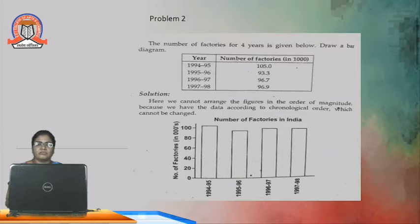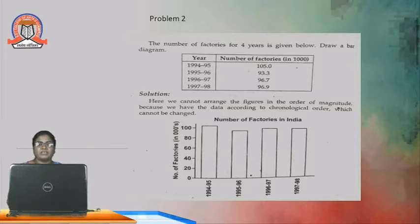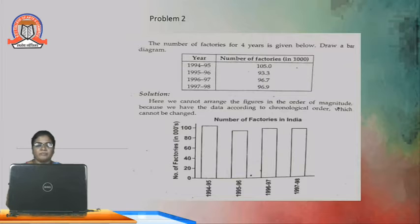Second problem — also a simple bar diagram. The number of factories for 4 years is given: 1994–95, 1995–96, 1996–97, and 1997–98, with factory counts of 105, 93.3, 96.7, and 96.9 respectively. Years are taken on the X axis and number of factories on the Y axis. Drawing bars for each year at the corresponding heights gives the bar diagram. The result is shown in the PPT.